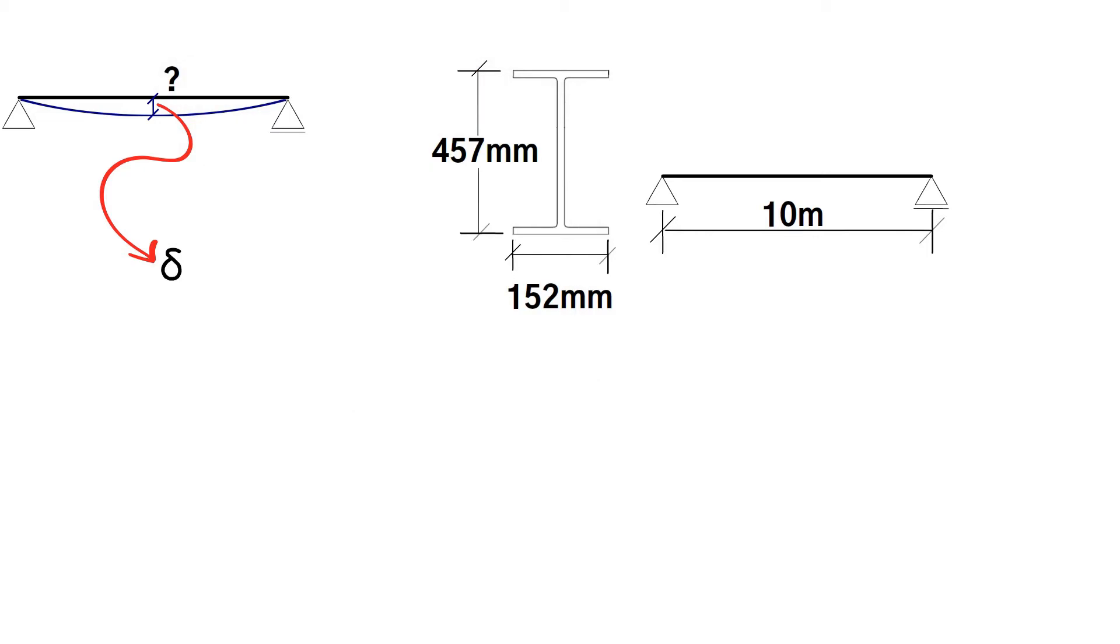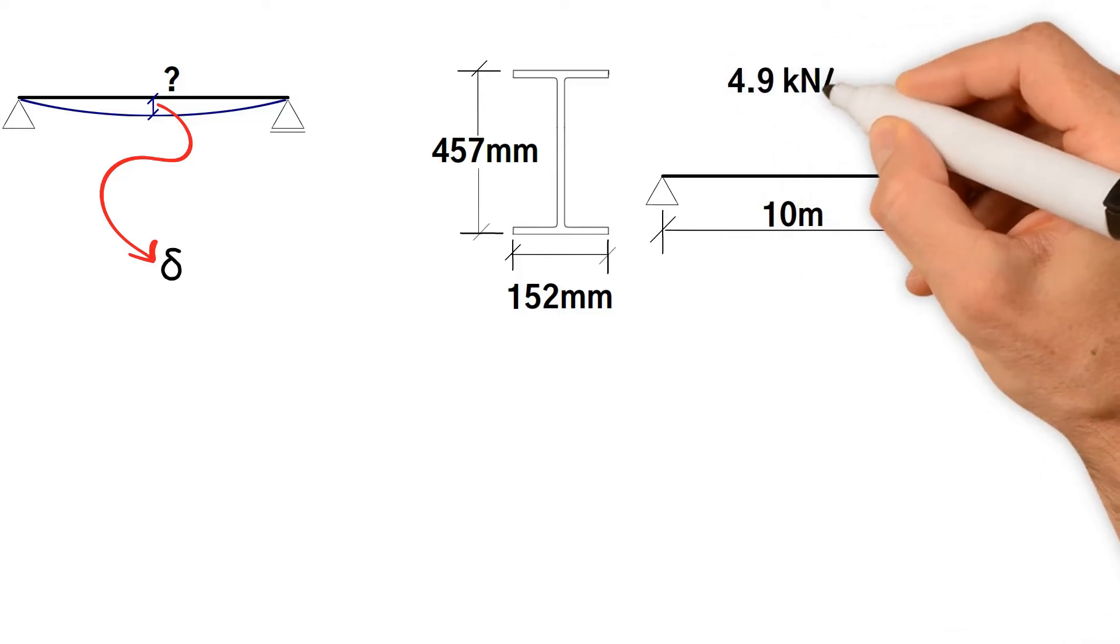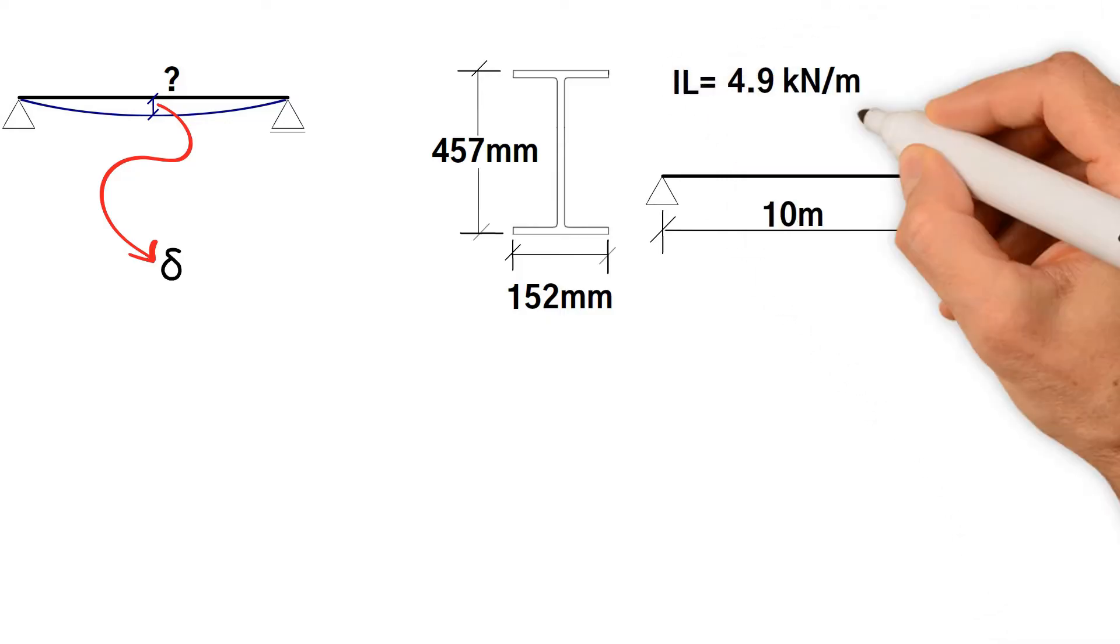So how do we work out the deflection of a simply supported steel beam? First of all, we have 4.9 kilonewton per meter imposed load. Now let's calculate the deflection.